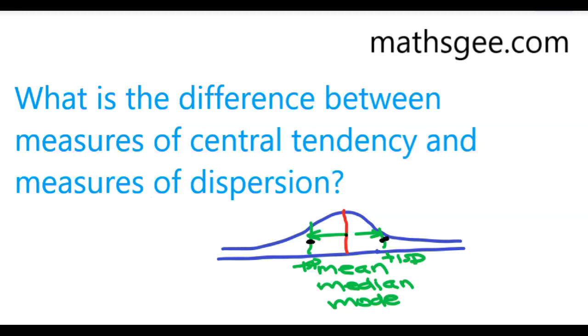There are different types of measures of dispersion. The easiest one is the range. The range is just saying the biggest value in the dataset minus the smallest value in the dataset.